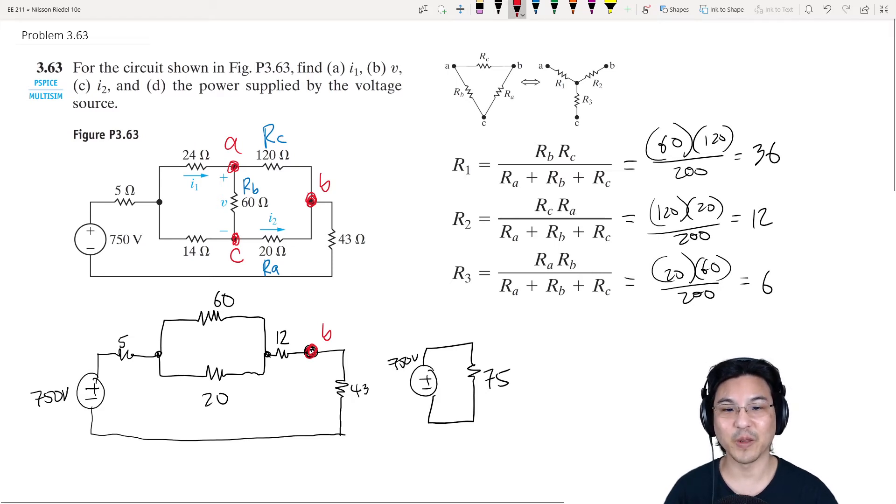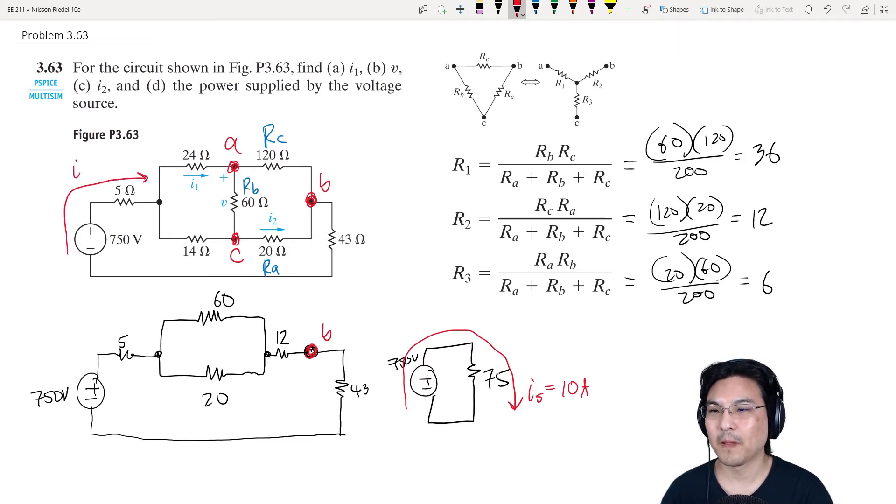So that means we know the current going like this is coming out of the source 750 over 75, 10 amps. So that means coming out of the source is 10 amps, like this, which means we can actually answer part D. The power. Notice that the voltage is positive going down and the current is positive going up, so it's actually negative. 750 times 10, so negative 7500 watts. Negative meaning power is being delivered, which is what we expected.